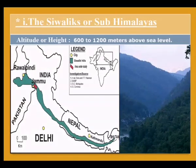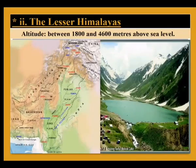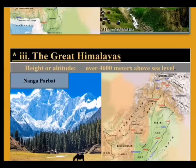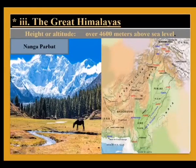The height of the Sivaliks mountains is 600 to 1200 meters above sea level. Further north, the height of the Lesser Himalayas is between 1800 and 4600 meters above sea level. In these mountains there are some beautiful places to visit, such as Murree, Nathiagali, and Ghora Gali.